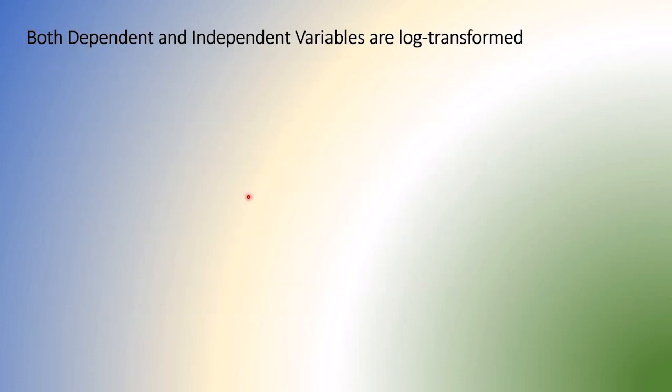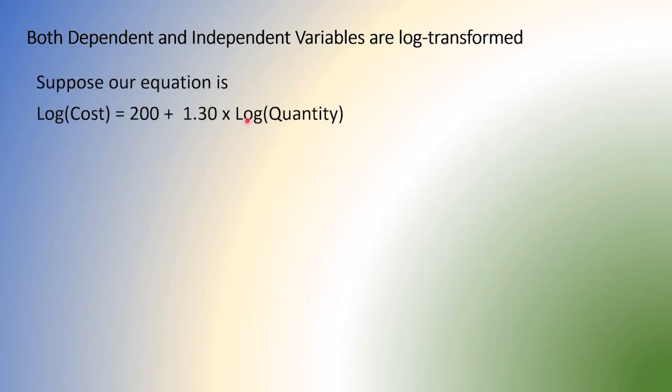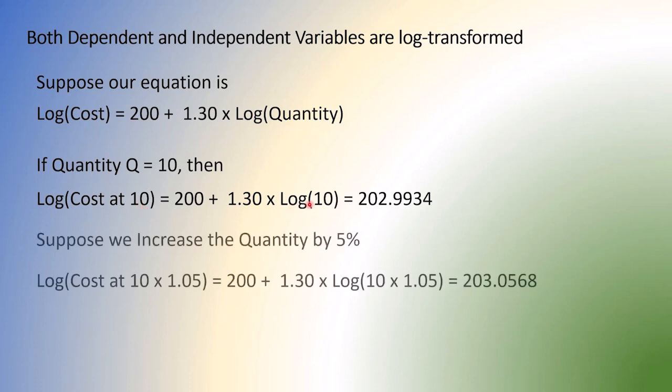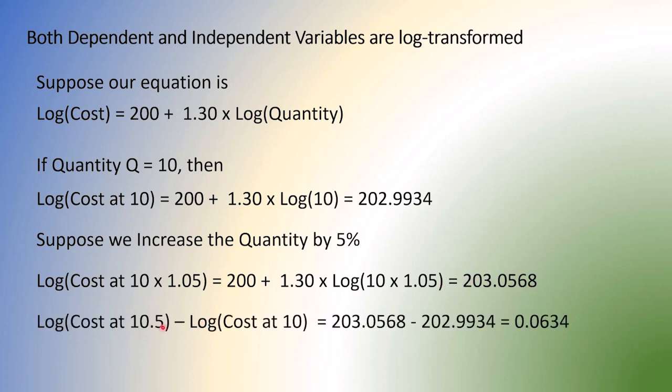Now we are going to go with both variable transformation. And now here is our equation. Log and log. Now suppose we have quantity 10. Then our cost will be this much. But that's a log cost of 10. Now what happens? Suppose we increase the quantity by 5%. Well then our cost now becomes that much. So what we have seen is when we increase quantity by 5%, the log cost increases by 0.0634. But this is the difference between two logs.